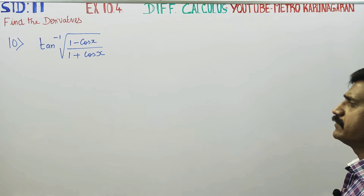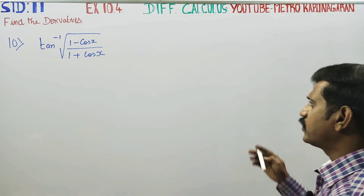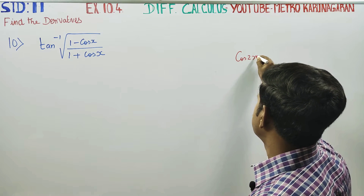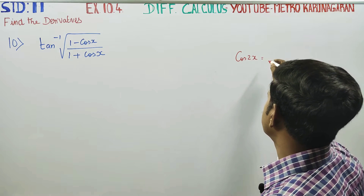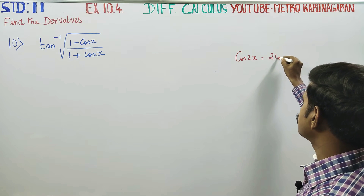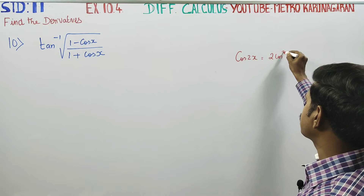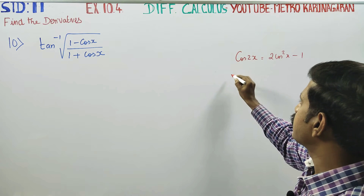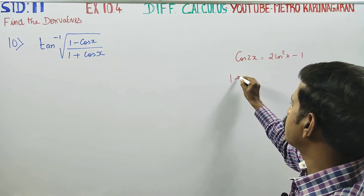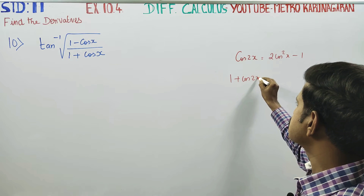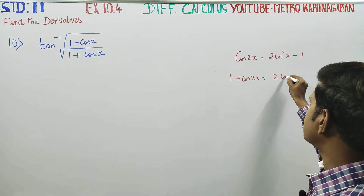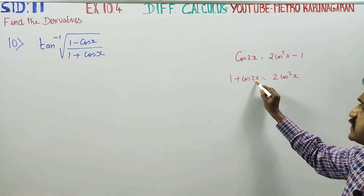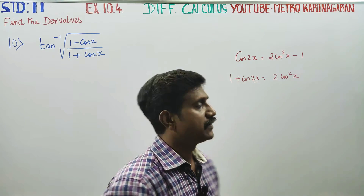Before entering into the sum, a small recall from trigonometry: cos 2x. Cos 2x is written as 2 cos squared x minus 1. From this, 1 plus cos 2x is equal to 2 cos squared x. This is the double angle formula.